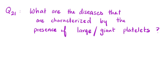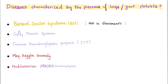Let me answer the question from the previous video: what are the diseases characterized by the presence of large or giant platelets, also known as macrothrombocytes? We have Bernard-Soulier syndrome (BSS) — note that large platelets are NOT found in Glanzmann, which is a very common mistake. We also have Gray platelet syndrome, which involves a problem in the alpha granules of platelets, and immune thrombocytopenic purpura, which is today's topic.